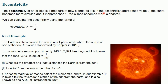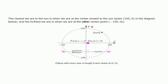Regarding eccentricity's physical significance: the Earth revolves around the Sun in an elliptical orbit. The eccentricity of an ellipse measures how elongated it is. If eccentricity approaches zero, the curve becomes more circular — a circle is a special case of an ellipse when a equals b. If eccentricity approaches one, the ellipse becomes more elongated. This orbital phenomenon was discovered by Kepler in 1610.